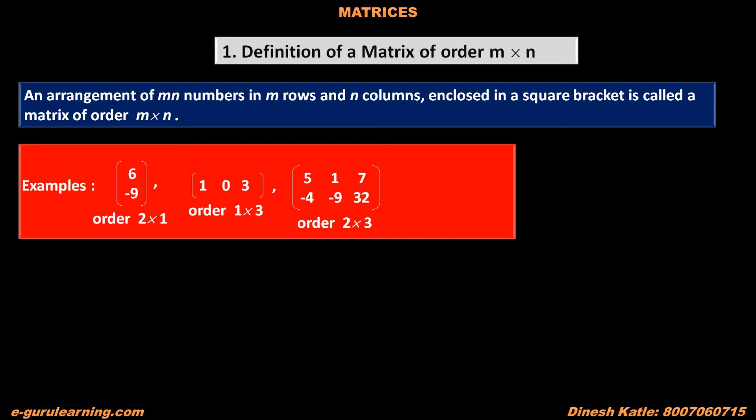The third matrix has 5, 1, 7 in the first row and minus 4, minus 9, 32 in the second row. This matrix has two rows and three columns, so its order is 2 into 3.